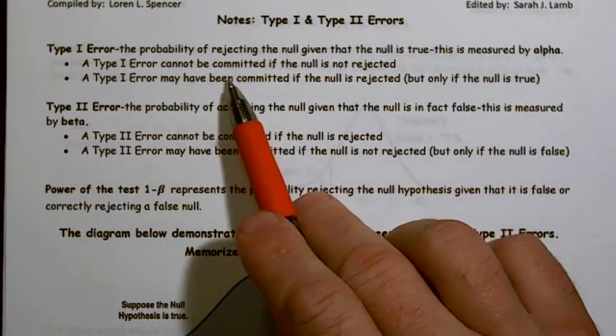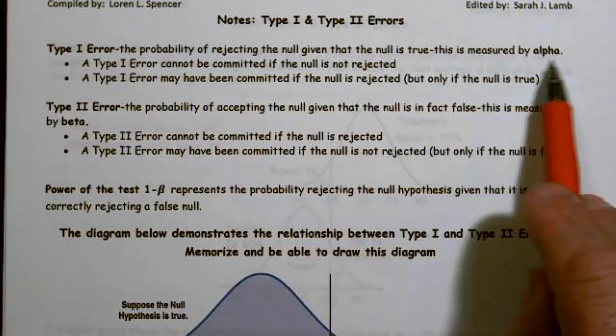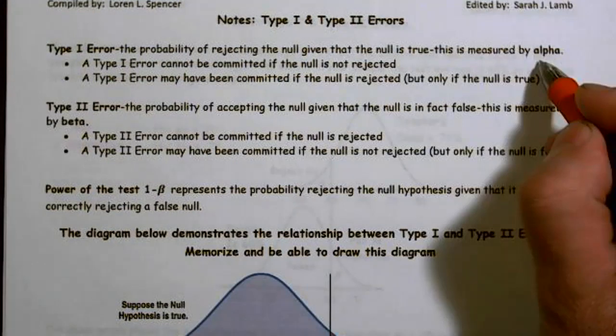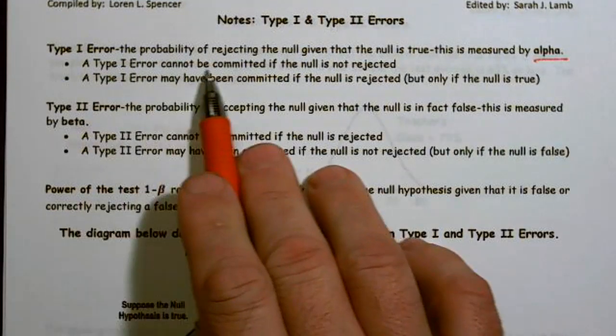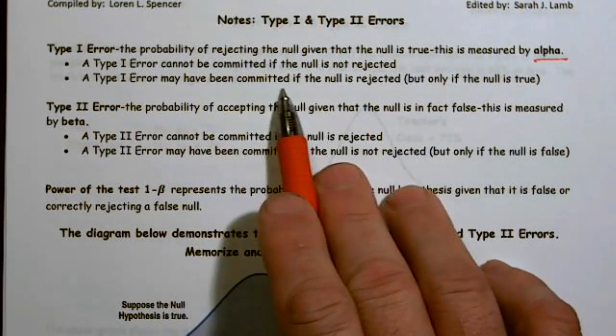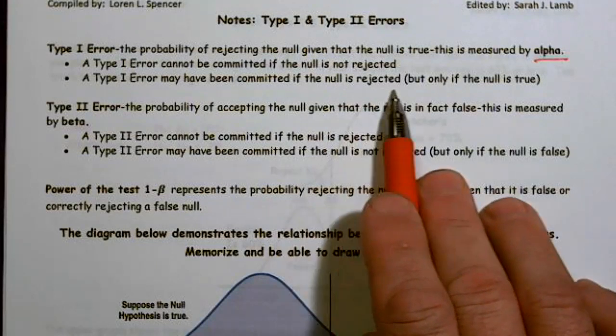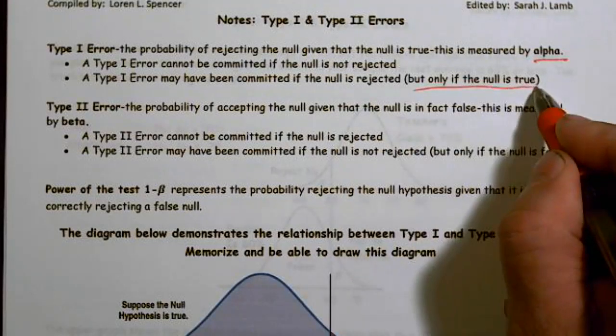So once again, type one error, the probability of rejecting the null given that the null is true. This is a conditional probability, and it's measured by alpha. A type one error cannot be committed if the null is not rejected. A type one error may have been committed if it is rejected, but only if the null is true.